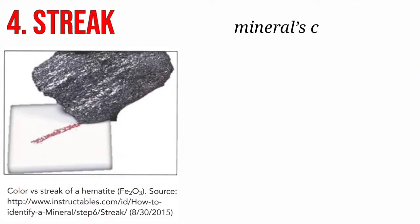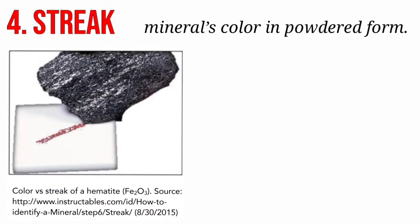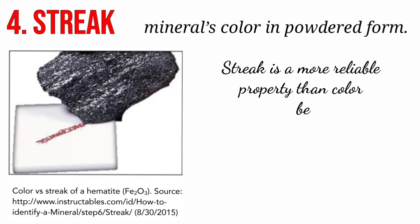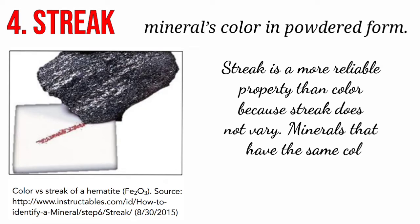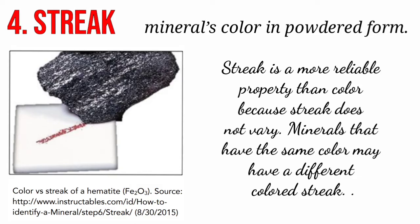We also have streak — the mineral's color in powdered form. Streak is a more reliable property than color because streak does not vary. Minerals that have the same color may have different colored streaks. An example is hematite.